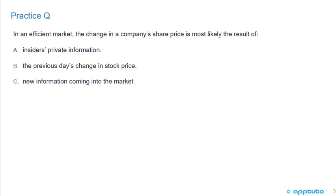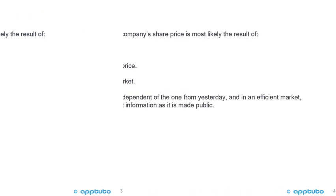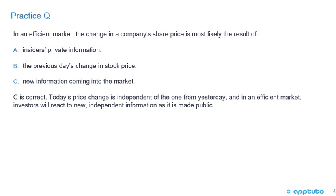Here's a quick practice question: In an efficient market, the change in a company's share price is most likely the result of: A, insider's private information; B, the previous day's change in stock price; or C, new information coming into the market. C is correct. Today's price change is independent of the one from yesterday, and in an efficient market, investors will react to new, independent information as it is made public.